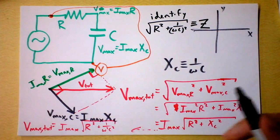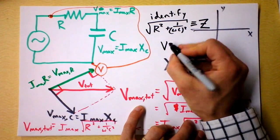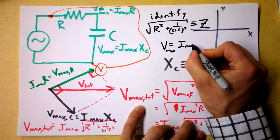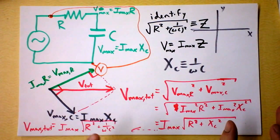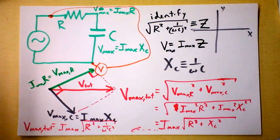And you will find that you get all kinds of really beautiful rules. For instance, V in a circuit max is Imax times the impedance, just like Ohm's law, except if you calculate the impedance, you can use it as the resistance. Yay!